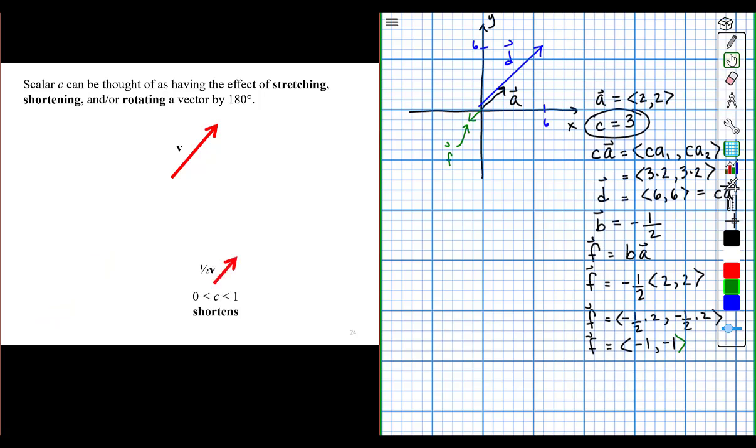Here, since our scalar is 1 half of the original vector, or since our scalar is 1 half, that's a number between 0 and 1, it shortens vector v. And here, since our scalar is equal to minus 1 half, minus 1 half is a number between 0 and negative 1. So this will both shorten the vector and switch its orientation by 180 degrees.